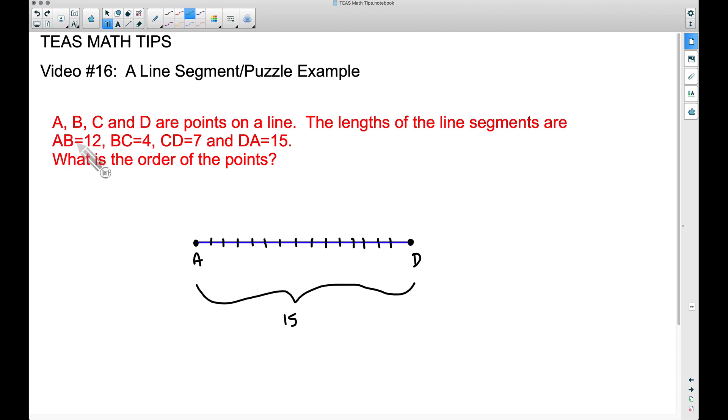Let's go to the next biggest one: AB is 12. Now let's make the assumption—and this isn't always correct—but let's just suppose that B is somewhere between A and D. And since AB is 12, we're going to count from A 12 units. So 1, 2, 3, 4, 5, 6, 7, 8, 9, 10, 11, 12—I'm going to put a B right here. So this distance here is 12.